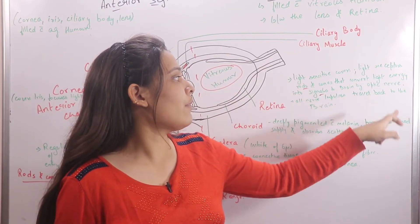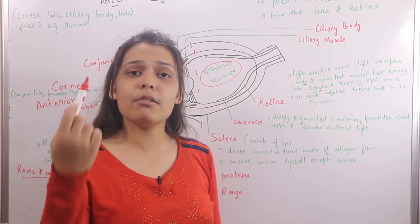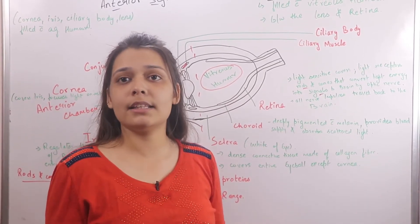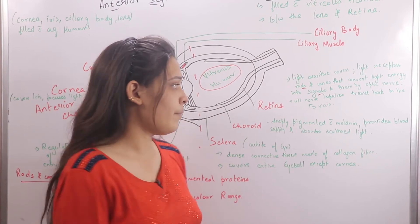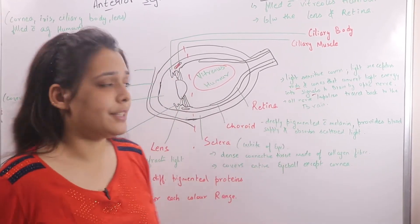All nerve impulses travel to the brain, and our brain signals give us recognition of what we are seeing. This is the work of our retina.